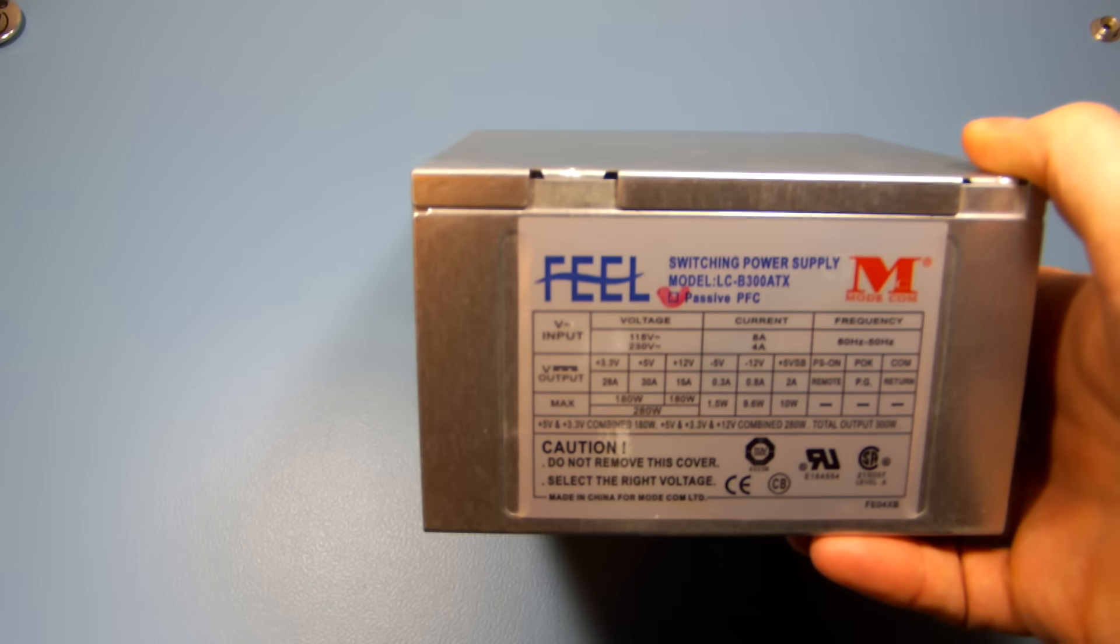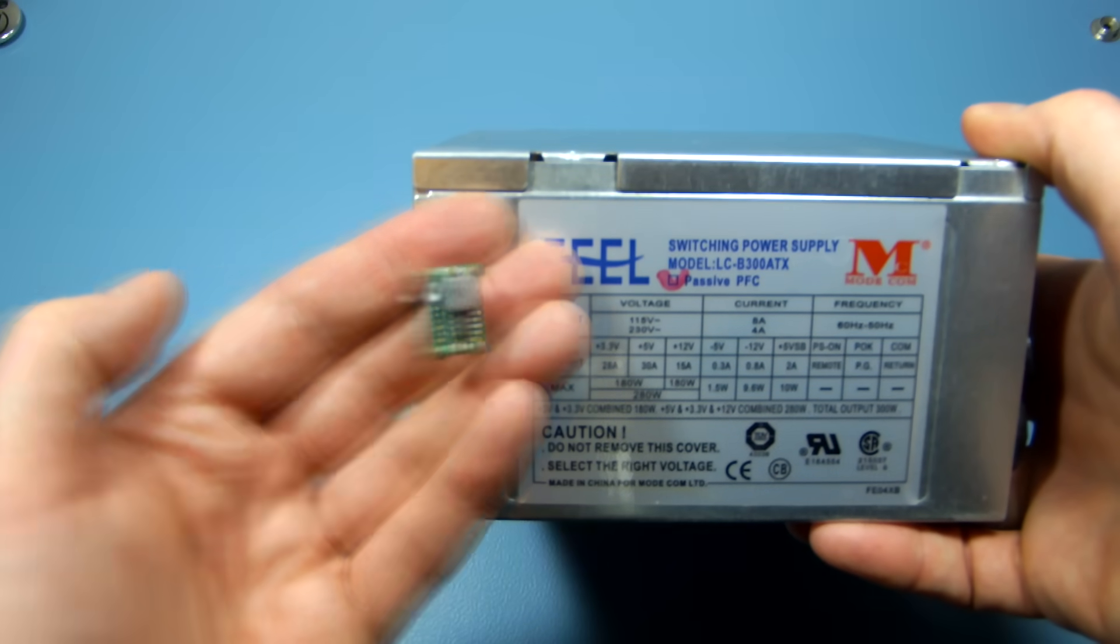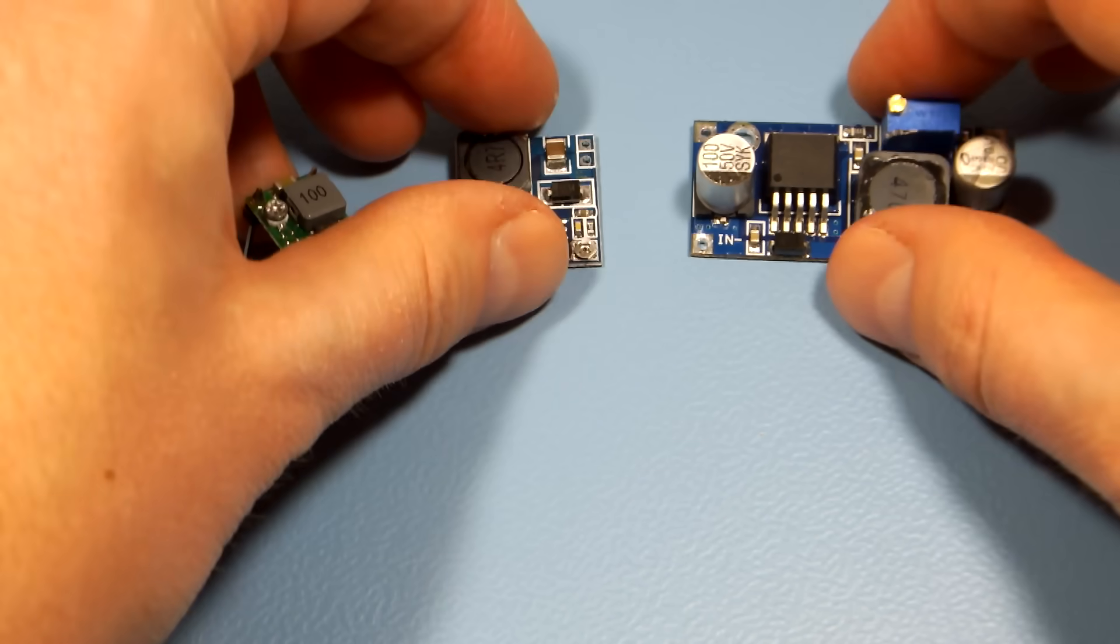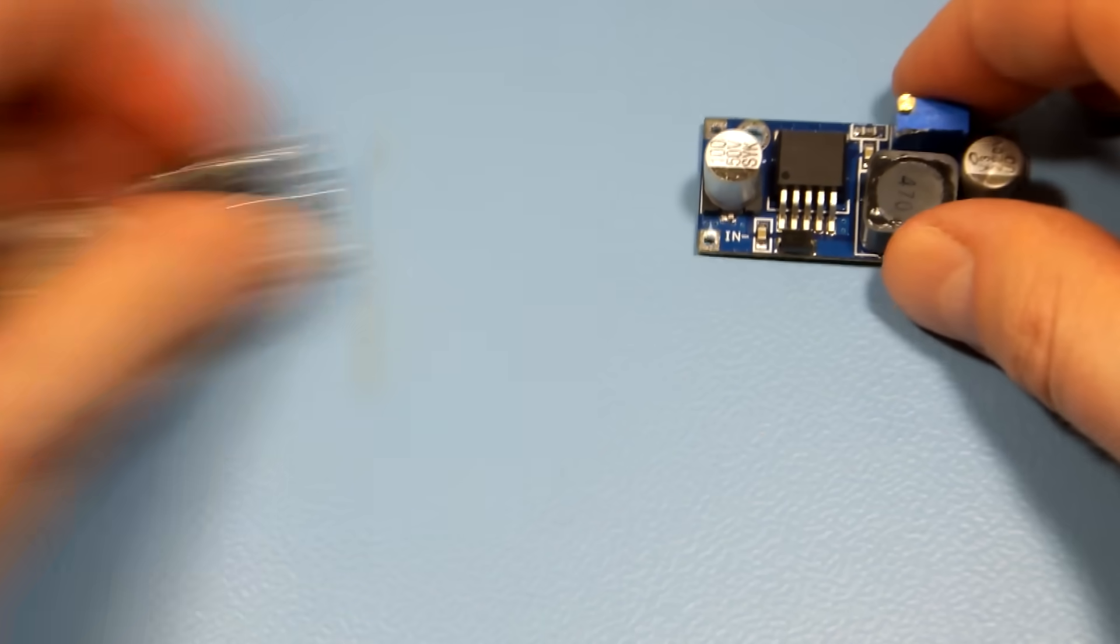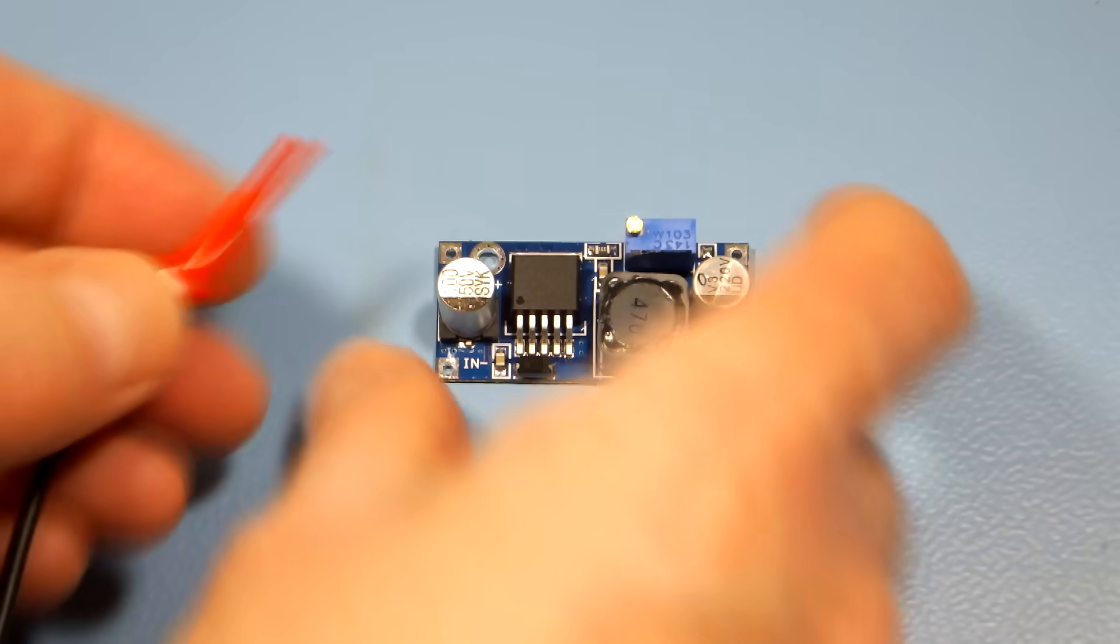Probably all computer power supplies utilize buck converter circuitry to maximize efficiency. You can buy buck converters in different shapes, sizes and with different specifications. Another name for a buck converter is voltage step down converter, which describes its purpose pretty well.